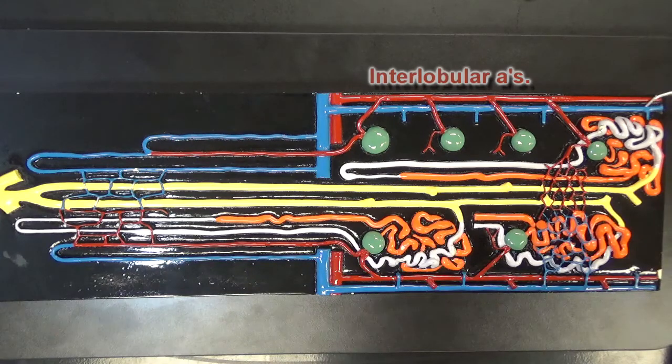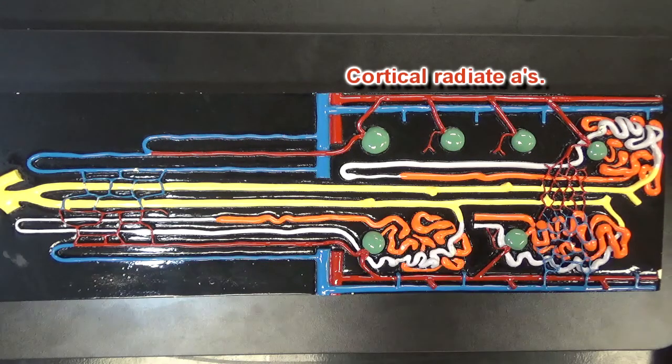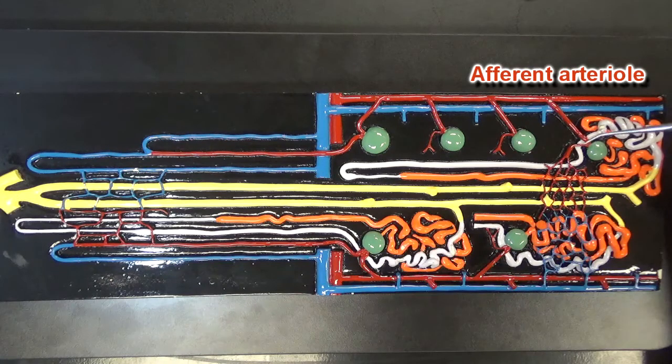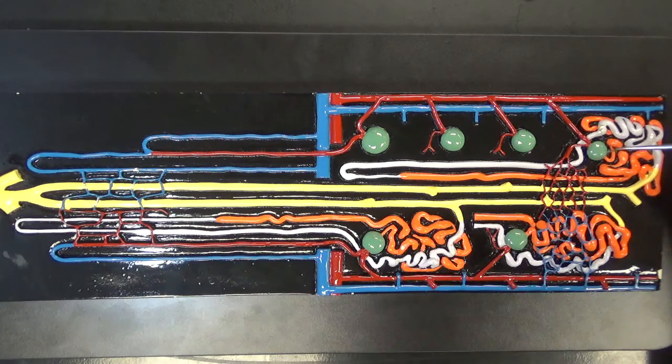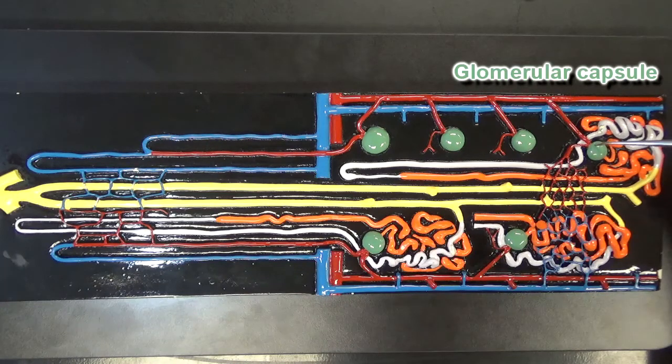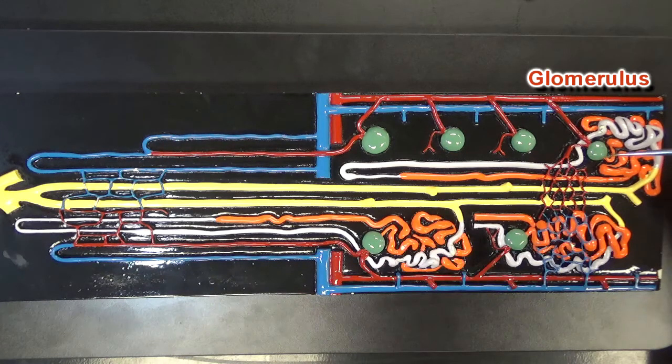This right here is an afferent arteriole and that afferent arteriole is going to bring blood into the glomerular capsule. Now inside this glomerular capsule is going to be where the glomerulus is, the ball of capillaries.